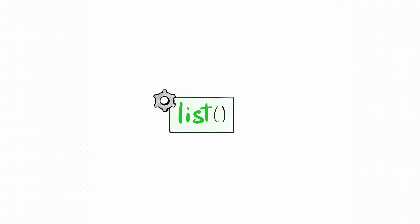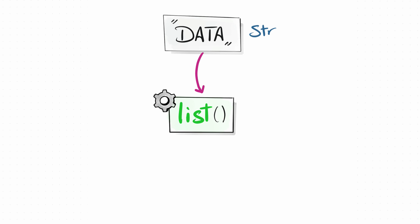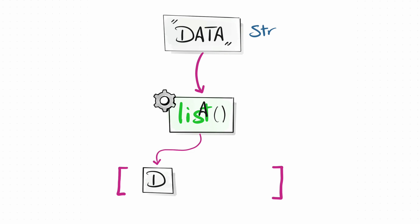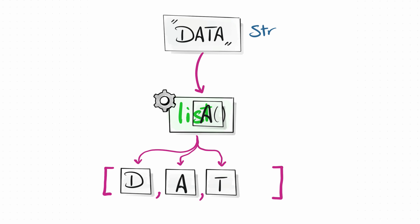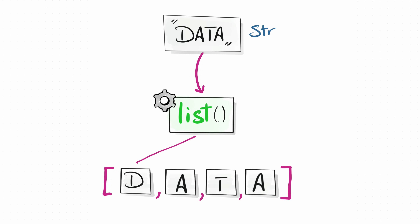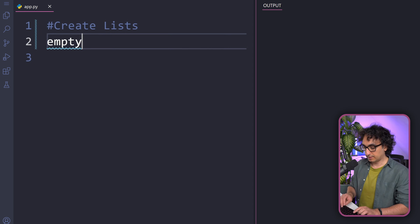There is another way to create a list in Python using the built-in function list(). If we have a string value, Python will take each character of the string and put it in a separate item in a brand new list — so 'd' becomes one item, 'a' becomes another, and so on. This lets us reuse existing data and convert it to a list data structure.